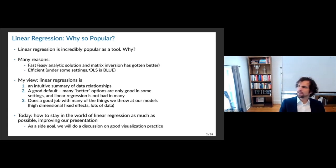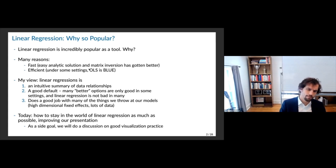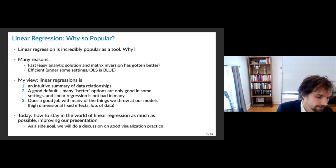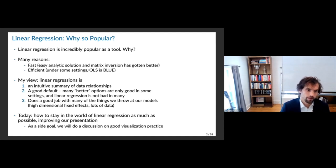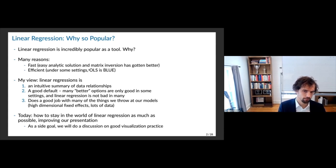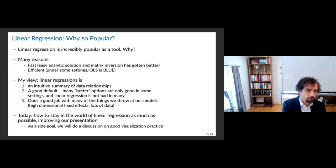A big one that I won't touch on today, but will matter when we talk about other settings: linear regression does a really good job with lots of fixed effects. Fixed effects a lot of times are not consistent — we can't consistently estimate them because we don't have a lot of data for them. In a nonlinear model, the inconsistent estimates would mess up the things we're interested in, whereas in linear regression we can still do things correctly. That's a really powerful case for OLS as the default approach for a lot of applied researchers, especially in economics.